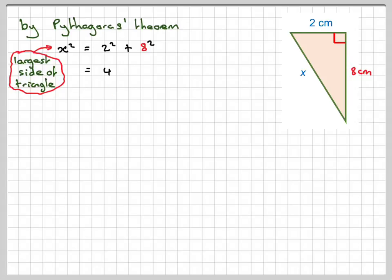So that's going to be equal to 4 plus 64. 2 squared is 4. 8 squared is 64. 4 plus 64 is 68.